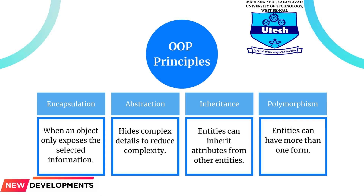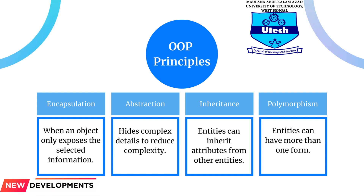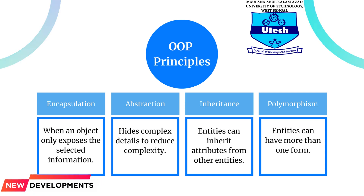Abstraction: objects only reveal internal mechanisms that are relevant for the use of other objects, hiding any unnecessary implementation code. The derived class can have its functionality extended. This concept can help developers more easily make additional changes or additions over time.